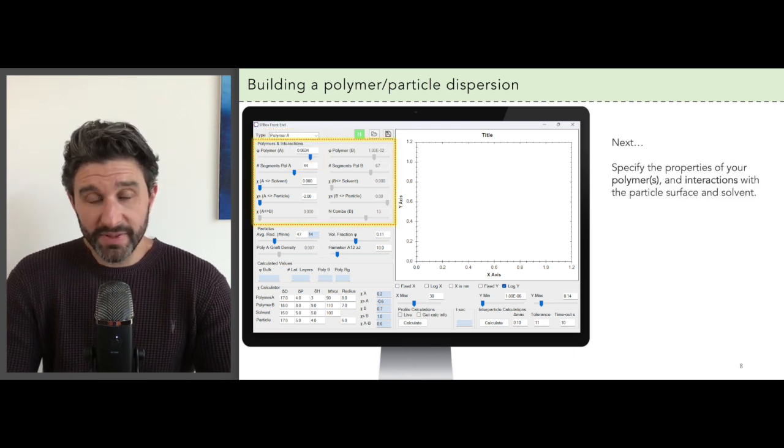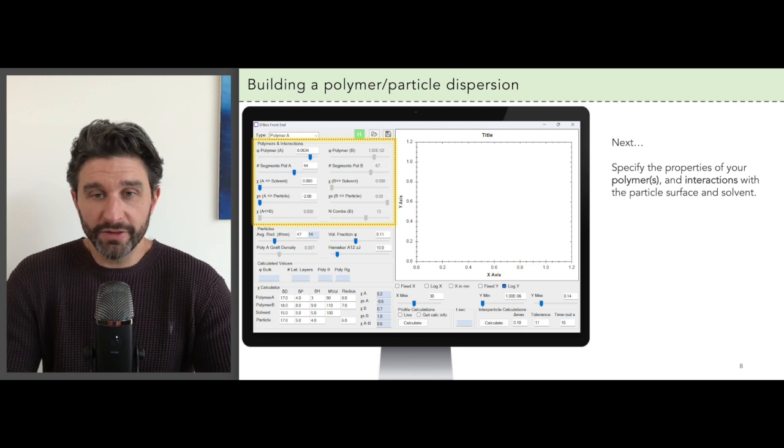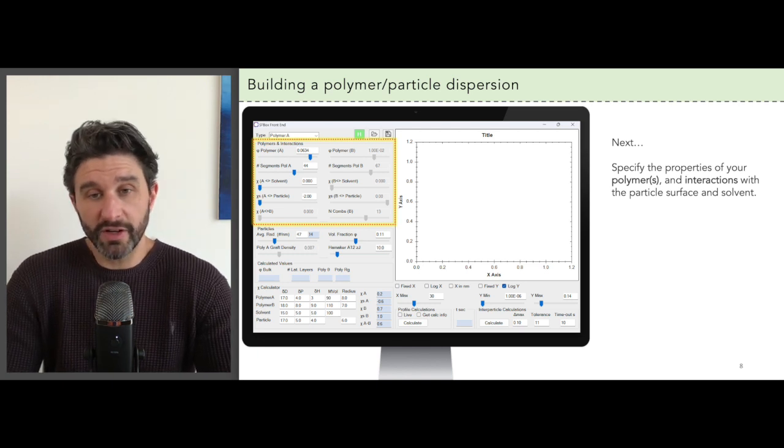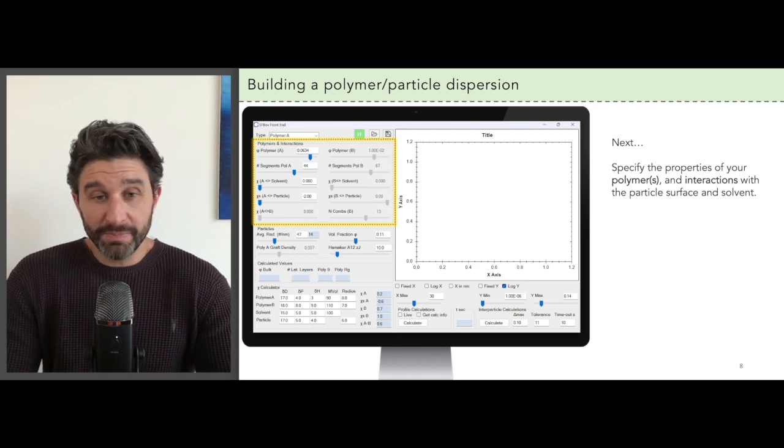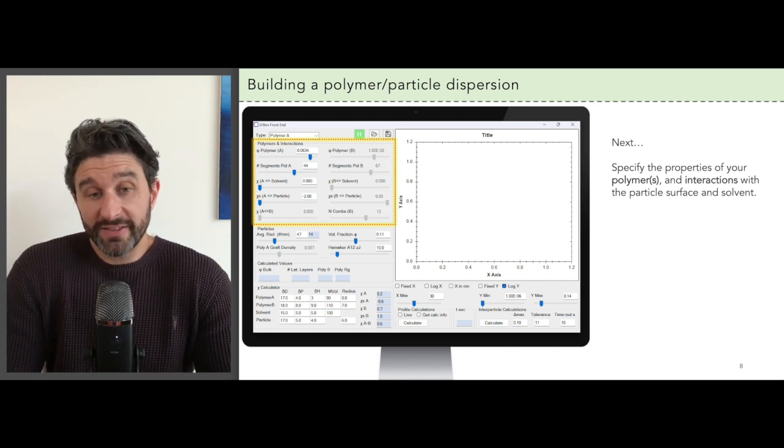The next step is to specify the properties of your polymers and also the interactions between the polymers and the solvent as well as the surface of the particles. Let's use the polymer A or homopolymer as a simple example here.